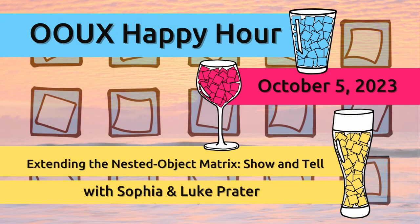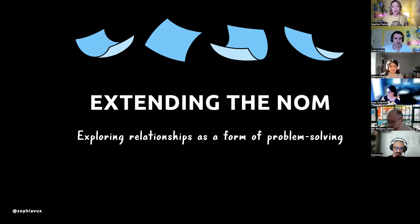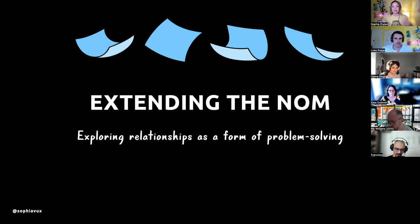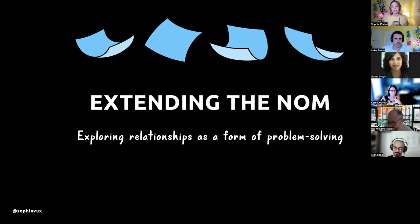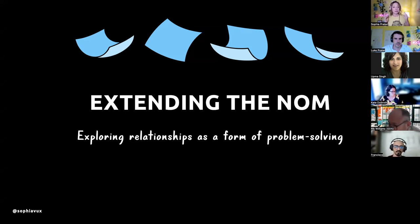I remembered just in time to hit record. My name is Sophia Prater — all things OAUX. I run RewiredUX, OAUX.com, the certification, and basically teach OAUX, do OAUX, and bring OAUX to my clients in the form of Orca Sprints. I use something called the NOM a lot — the Nested Object Matrix.